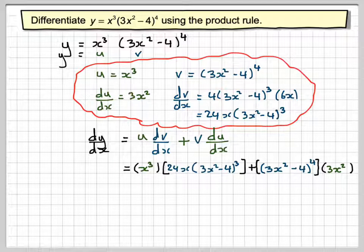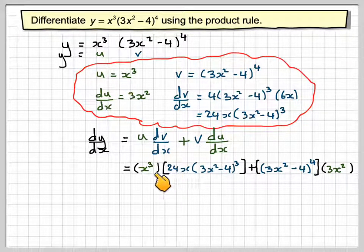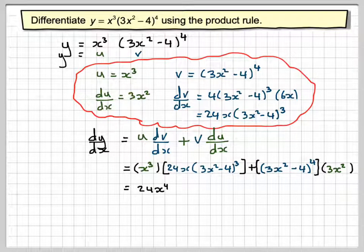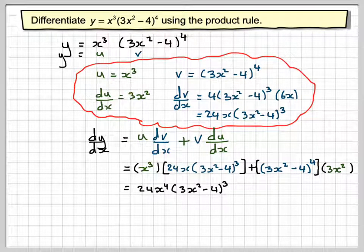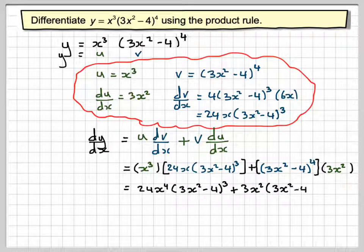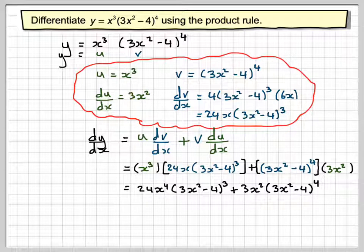Now take a bit of trouble to rewrite this before you start to factorize this. So this is going to be 24x to the 4 times 3x squared minus 4 cubed plus 3x squared times 3x squared minus 4 to the power of 4.